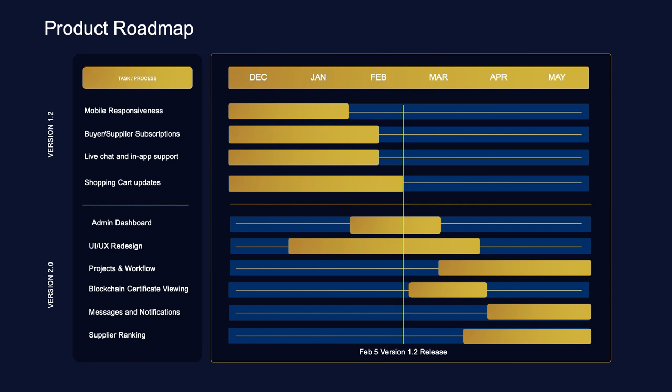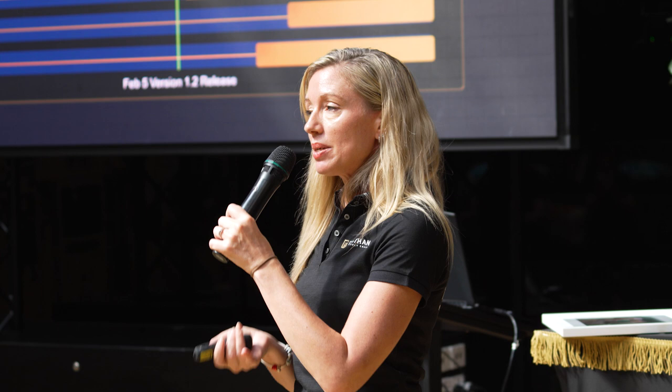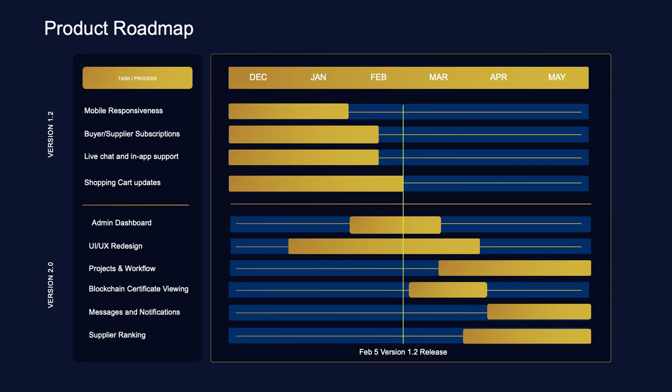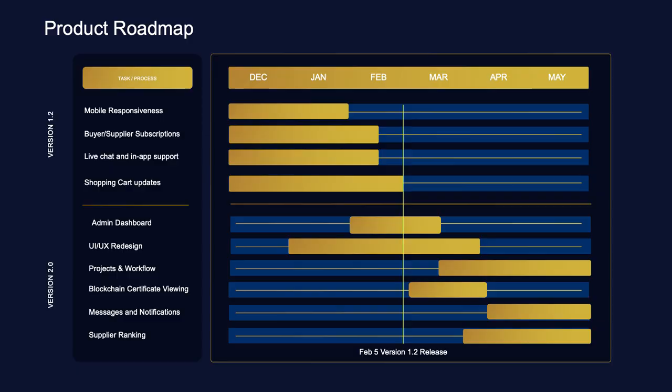We've got a big platform redesign underway — totally redesigning the way it looks and flows — and that includes projects and workflow, which is really important because we've had huge opportunities to work with people doing construction projects. They have large amounts of materials being bought from overseas that they need to keep collected together in one project and easily compare and contrast their quotes. We're also adding the ability to view your blockchain certificates for each step of the way — every time you save a purchase order to the platform, that creates a certificate on the blockchain, and you'll be able to see those certificates linked to each of the smart documents you've created. We're also improving messaging, notifications, and adding supplier rankings.